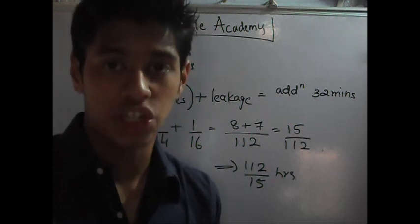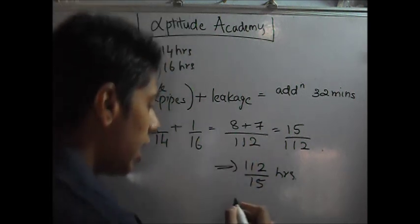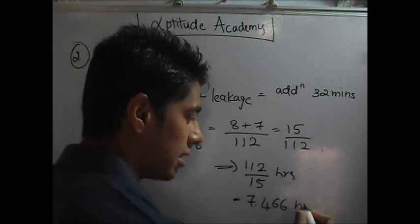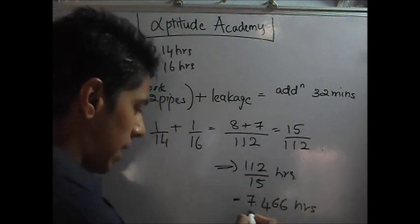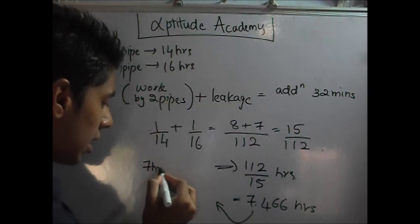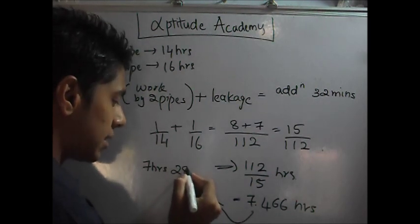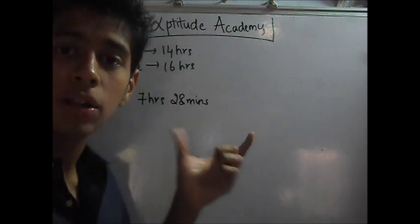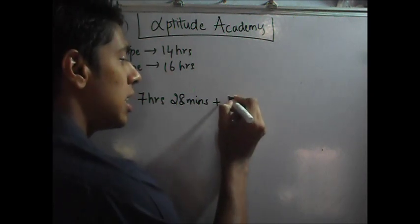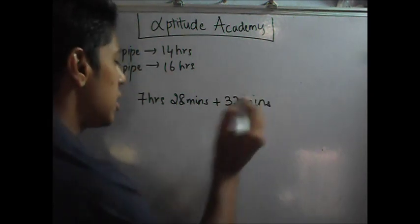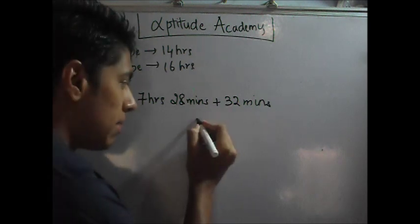Now, let's consider the leakage. Before that, let's simplify this. What is 112 divided by 15? It comes out to be 7.466 hours. Now, but you don't know what is .466, right? So, to simplify it, you go on for this part. It will be 7 hours. Keep that at the side. And you don't know what is .466 hours. So, multiply .466 into 60. You will get 28 minutes. Now, we've got 7 hours and 28 minutes. Now, let's consider the leakage. They've said that with the leakage, it takes an additional 32 minutes. Now, just look at this for a while. What is 28 minutes plus 32 minutes? 60 minutes. 60 minutes is an hour. So, 7 plus 1. So, this comes out to be 8 hours.